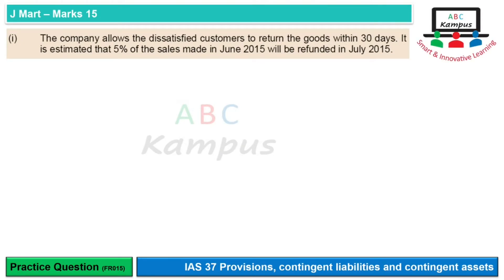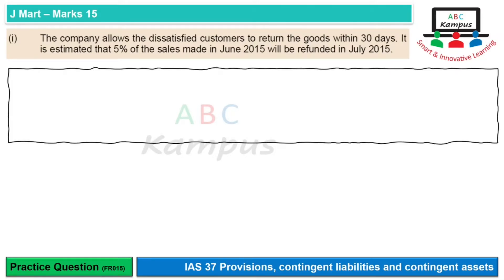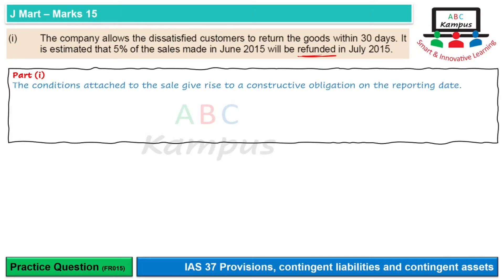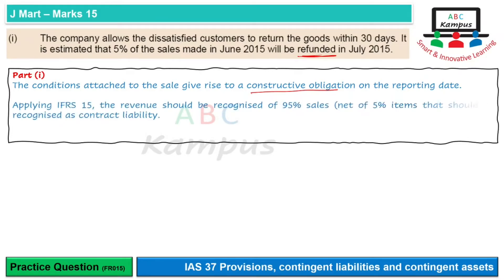Pahla issue hai ki company allows dissatisfied customers to return goods within 30 days. It is estimated that 5% of the sales made in June 2015 will be refunded in July 2015. Joh conditions attached hain unse humari constructive obligation ban jati hai — agar koi customer goods waapis karne aata hai, toh humari policy hai hum unhain return allow karte hain, refund de diya jata hai. Toh it becomes our constructive obligation, aur iske sath hi hume ek liability recognize karna hai.